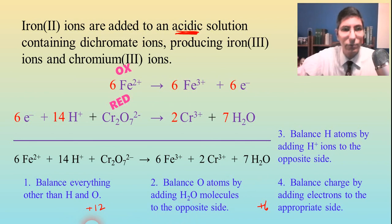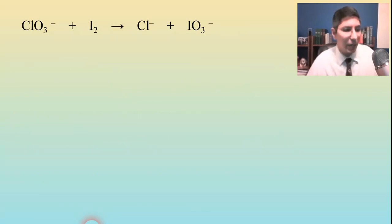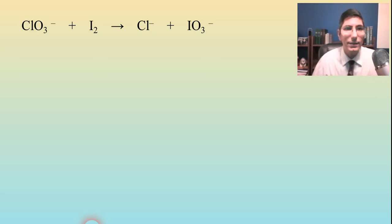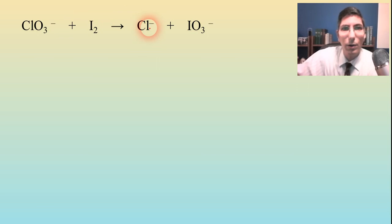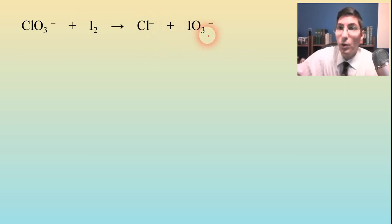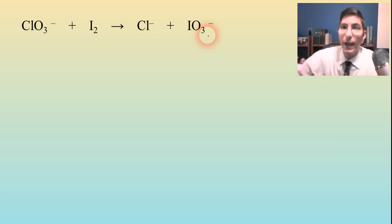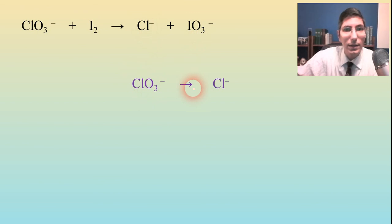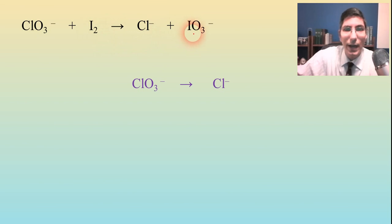Let's try another example where the equation is written for us. We have the chlorate ion being added to an iodine molecule, giving us a chloride ion and an iodate molecule. What you want to do first is separate these into their half reactions. I'm going to put the chlorate and the chloride in one of them, because that's obviously a pair. And then iodine going to iodate is another obvious pair.